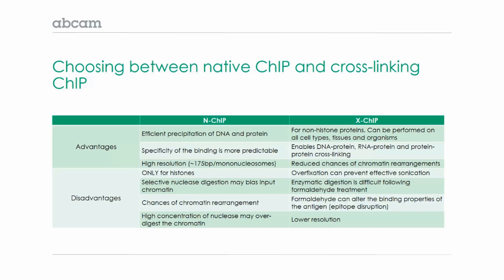The disadvantages of native ChIP include the fact that it's only for histone proteins because the DNA is tightly interacting with these proteins. If you want to do ChIP of transcription factors, since their binding to DNA is not strong, you'll have to cross-link to ensure the protein-DNA interaction remains intact. Another disadvantage is that since the nuclease digestion is selective, the digestion may bias input chromatin, and there are also chances of chromatin rearrangement. And of course, if you use too much nuclease, you could over-digest the chromatin.